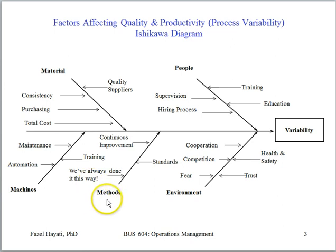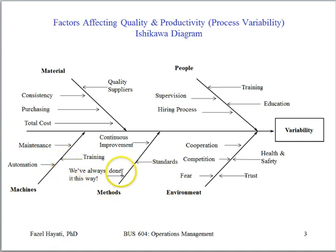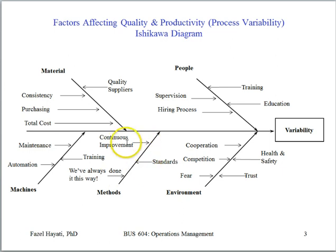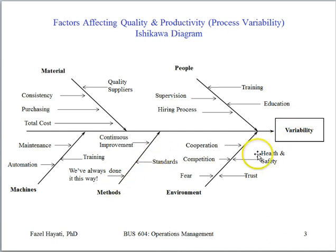Under methods: are we involved in continuous improvement, or are we just allowing obsolescence to settle in? The idea that 'we've always done it this way' — do we have standards and standard operating procedures? These are all contributing factors. If we are involved in continuous improvement, perhaps over time we reduce variability in the process. If we have standards or standard operating procedures, that also reduces variability in our processes.